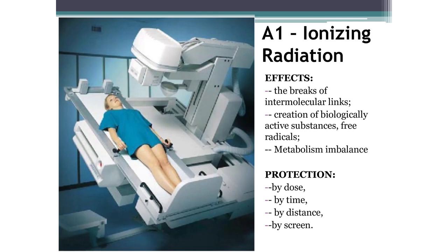There are four ways to protect against radiation. First, dose protection: get as little radiation dose as possible. Second, time protection: contact with ionizing radiation should be minimized — therefore, radiologists in the Russian Federation have a short working day, a long vacation, and retire earlier. Third, distance protection: a person should be as far as possible from the source of ionizing radiation. Fourth, screen protection: different materials are required for different types of radiation — lead is best for X-rays and gamma radiation, iron or aluminium for beta radiation, and synthetic polymers for neutron radiation.